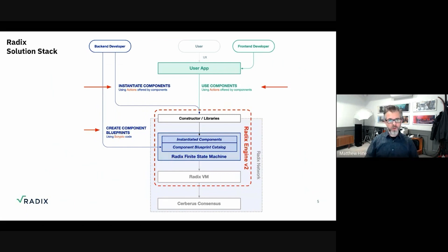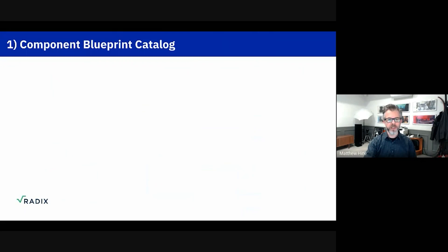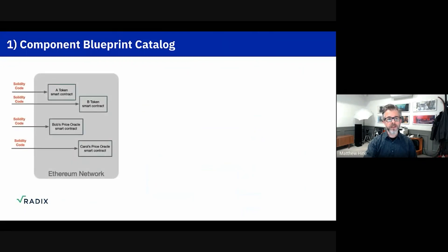So why does that matter? What's so great about the Radix Engine V2? There are two major features that we give a developer with this. The first is the component blueprint catalog. It's an interesting difference from Ethereum. Let's look at the life cycle of building and deploying a smart contract. On Ethereum, it looks kind of like this: you write Solidity code, you deploy that Solidity code to the network, and it becomes a smart contract.